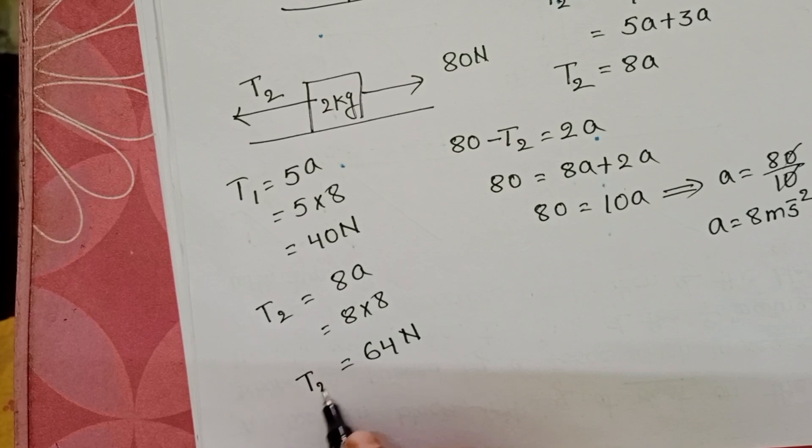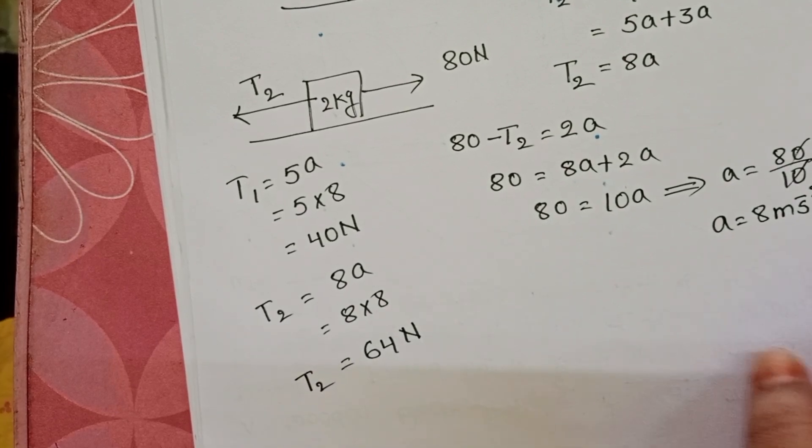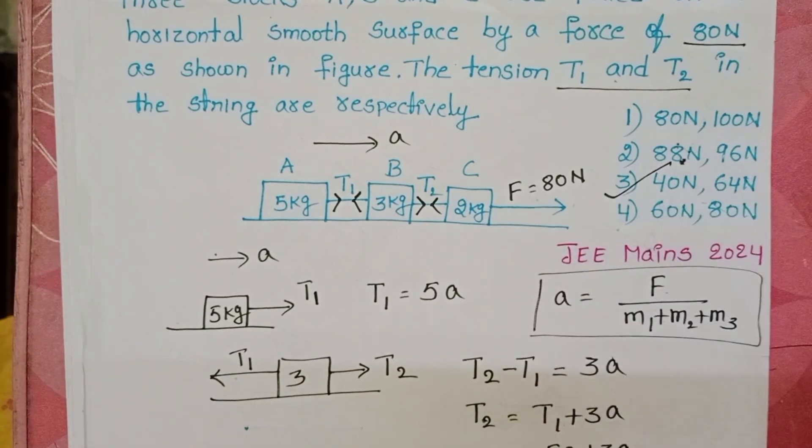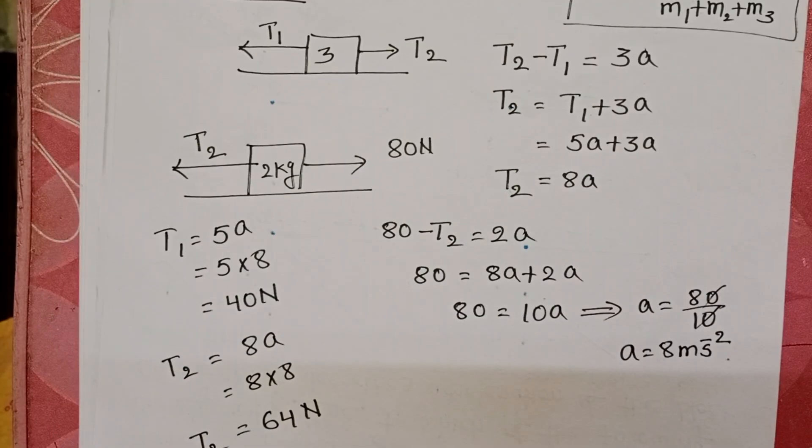So T1 is 40 newton and T2 is 64 newton. Check the options. Third option is correct. All right, see you in the next section.